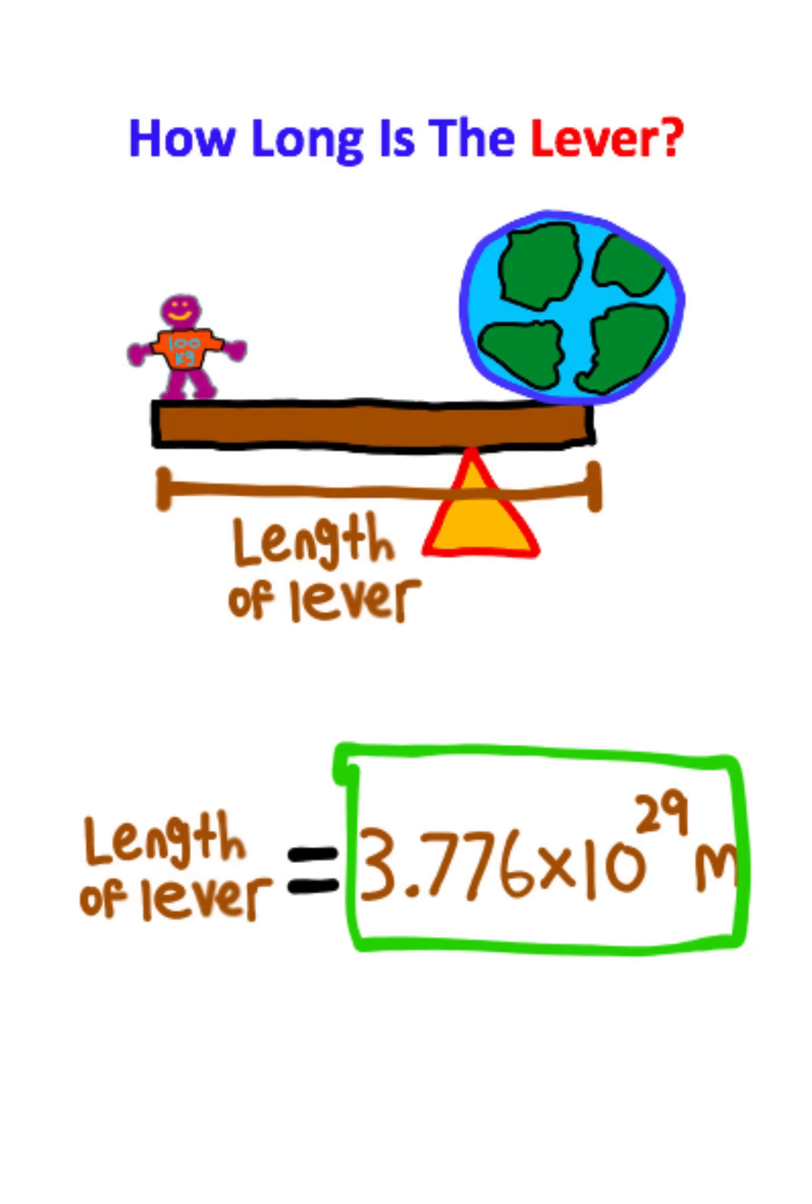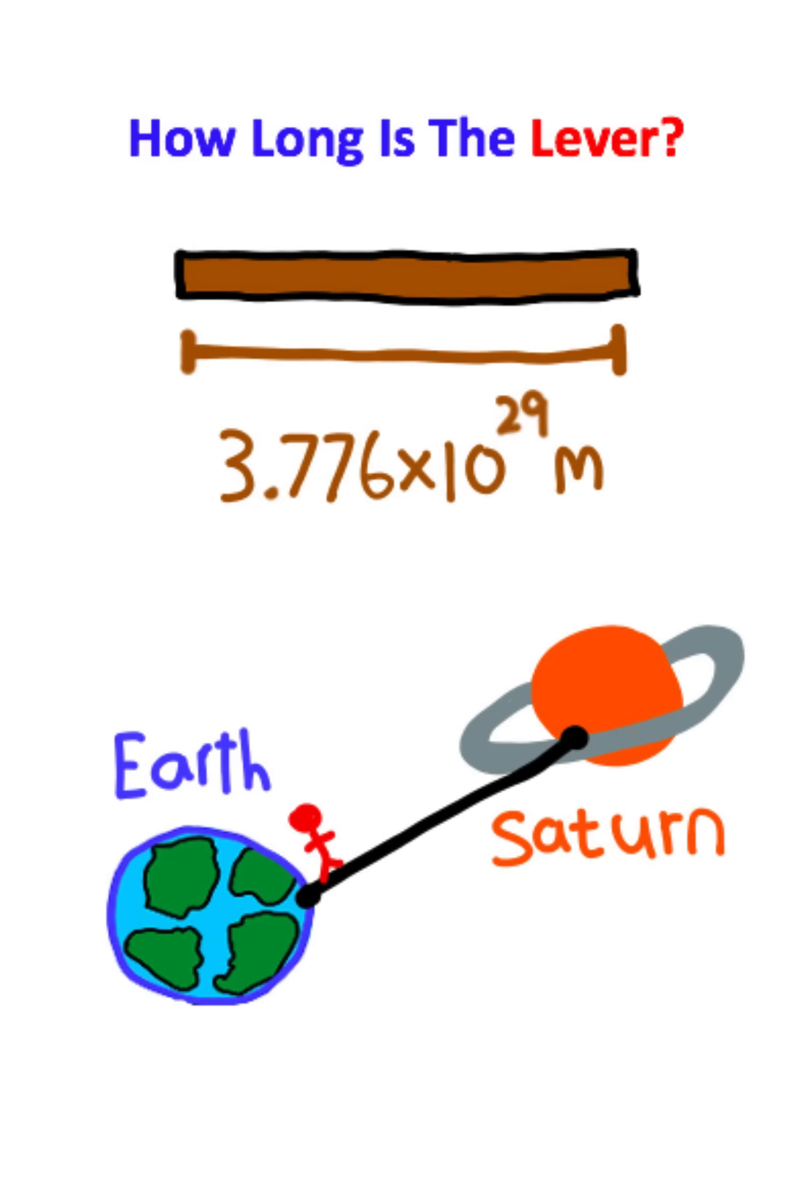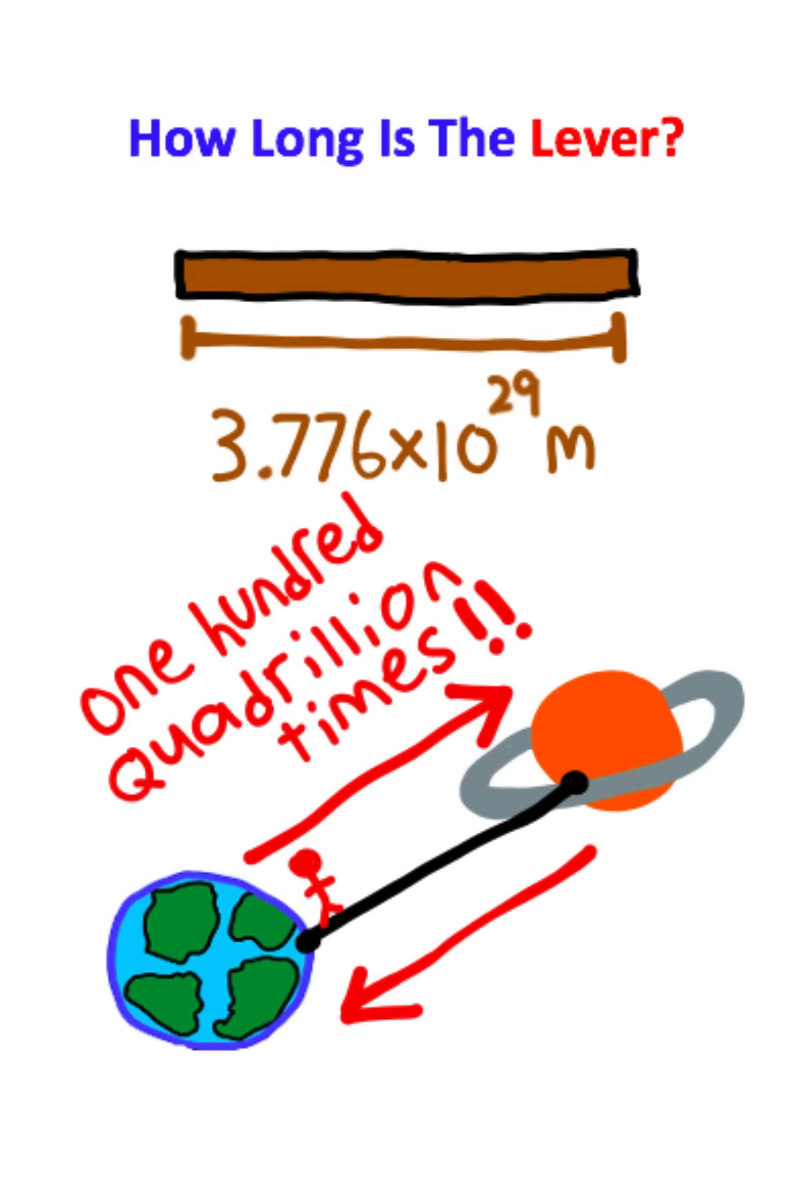In fact, if you're wondering just how long this lever is, if you built a bridge between the Earth and Saturn, you could travel back and forth across this bridge 100 quadrillion times before you've traveled the distance of this lever. So chances are, we won't be moving the Earth anytime soon.